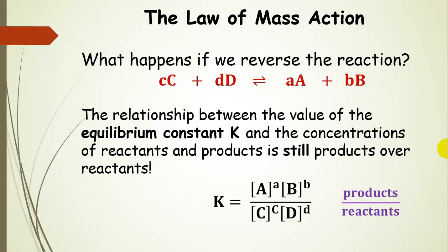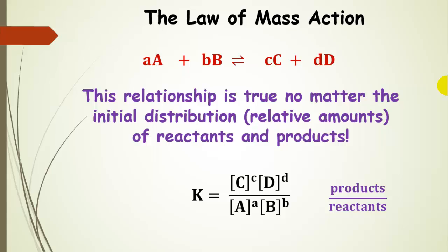What happens if we reverse this reaction? Let's make the products the reactants and the reactants the products. When we do that, the equilibrium constant K is still products over reactants depending on how we wrote it. Now A and B are products in the numerator raised to their coefficient power, and C and D are in the denominator. This relationship is true no matter the initial distribution of reactants and products — we can start with all reactants or all products and end up with the same distribution.